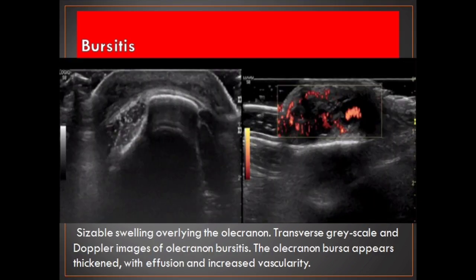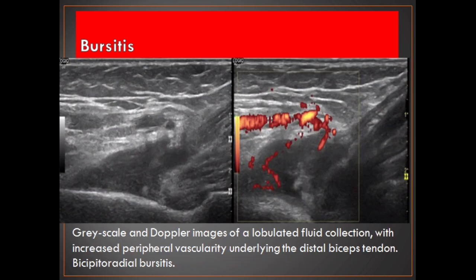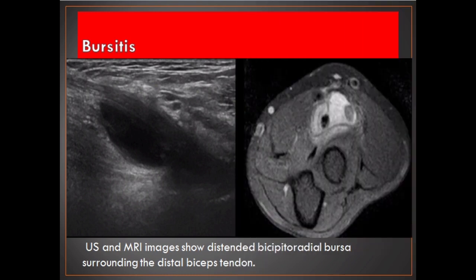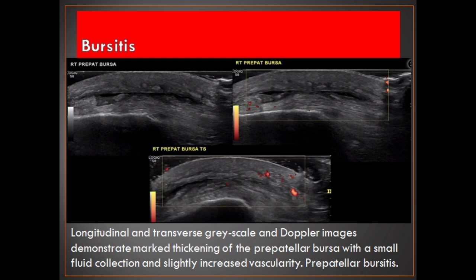Sizable swelling overlying the olecranon. Transverse grayscale and Doppler images of olecranon bursitis — the olecranon bursa appears thickened with effusion and increased vascularity. Grayscale and Doppler images of a lobulated fluid collection with increased peripheral vascularity underlying the distal biceps tendon — bicipitoradial bursitis. Ultrasound and MRI images show distended bicipitoradial bursa surrounding the distal biceps tendon. Longitudinal and transverse grayscale and Doppler images demonstrate marked thickening of the prepatellar bursa with a small fluid collection and slightly increased vascularity — pre-patellar bursitis.